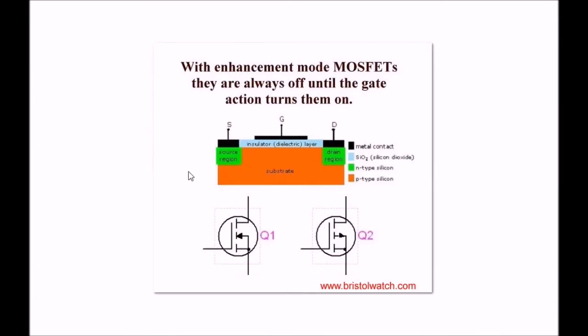Again, let's look at the construction of a MOSFET. Here is your gate, there's your insulator dielectric layer, there's your substrate. When you put an electrical charge on it, it creates a conductive channel from source to drain. Too much voltage, you punch through the dielectric insulator.